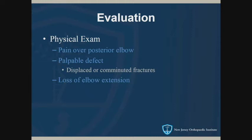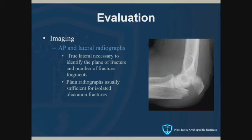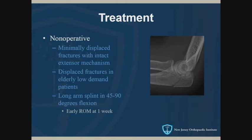Patients will generally have loss of extension — if you have them try to extend against resistance, they won't be able to do that or it will be too painful. Imaging is the standard AP and lateral radiographs; once again, you want the true lateral. Non-operatively, we treat these if the fracture is minimally displaced and the patient is able to extend, confirming their extensor mechanism is intact.